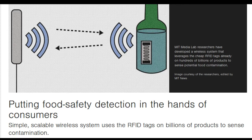MIT Media Lab researchers have developed a wireless system that leverages the cheap RFID tags already on hundreds of billions of products to sense potential food contamination, with no hardware modifications needed.